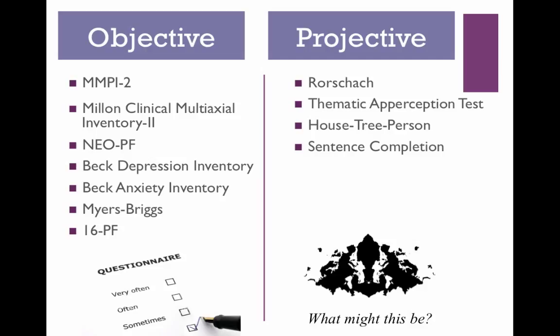Projective tests are different — you likely have less experience with these. These include the Rorschach inkblot test, the Thematic Apperception Test which is a storytelling test, the House-Tree-Person which is a drawing test, and sentence completion — a type of test where you give someone a sentence stem such as "my mother..." and then let them fill in the blank. You then interpret the responses from a list of around 35 questions like that.